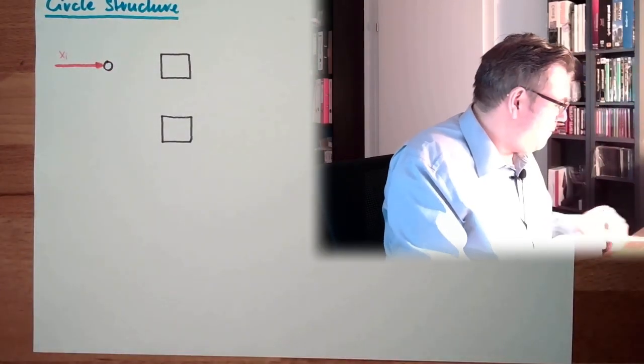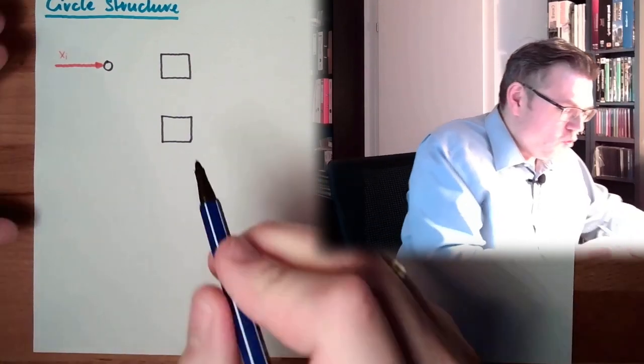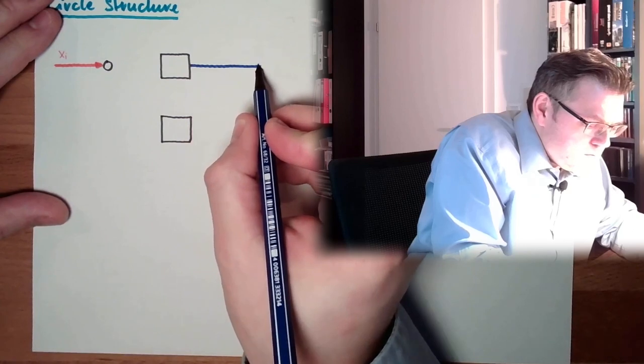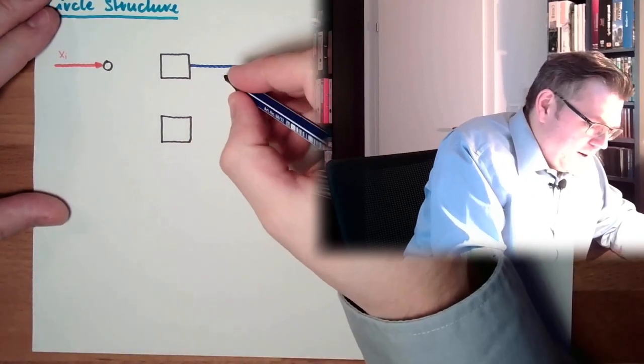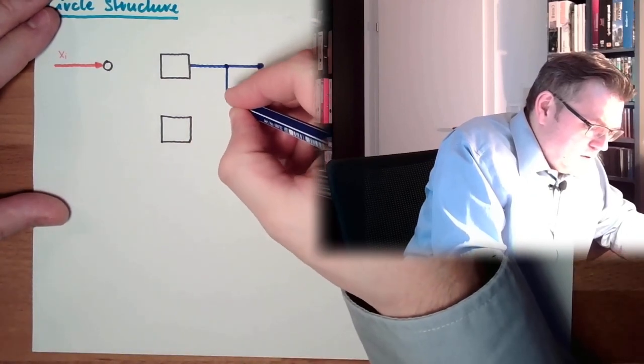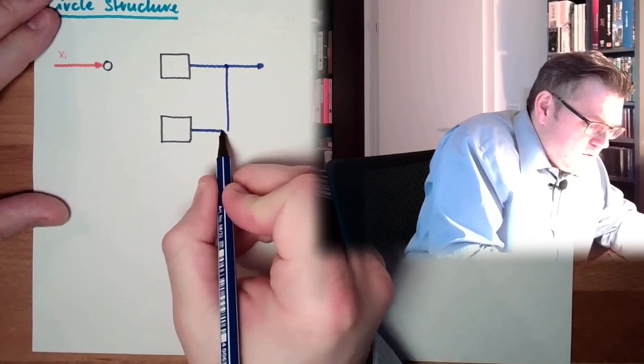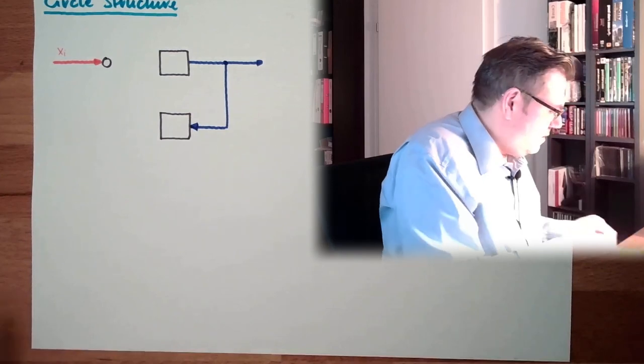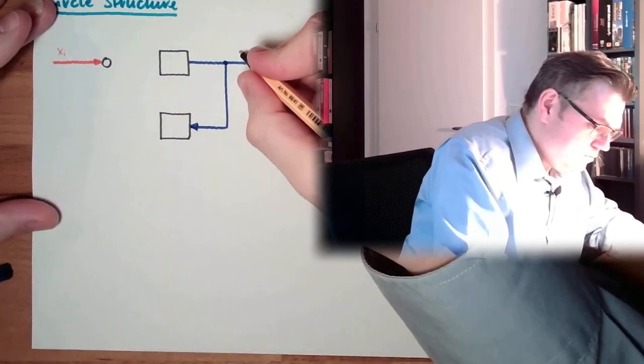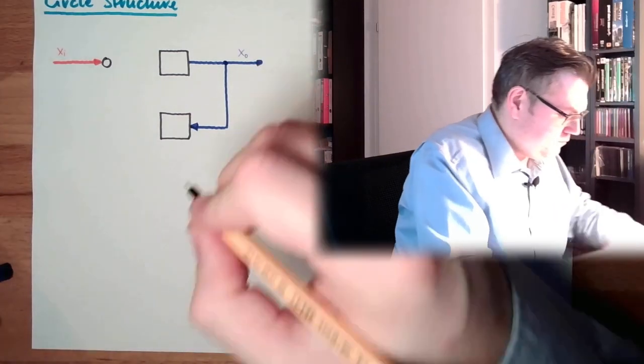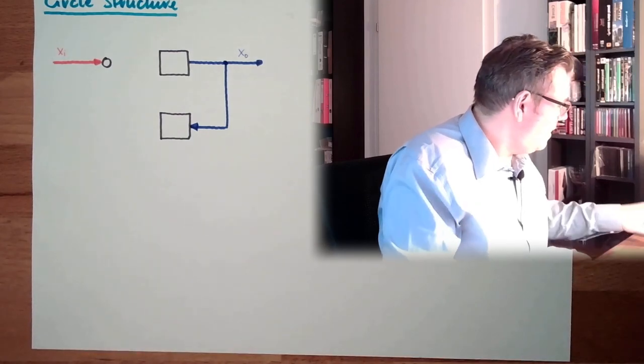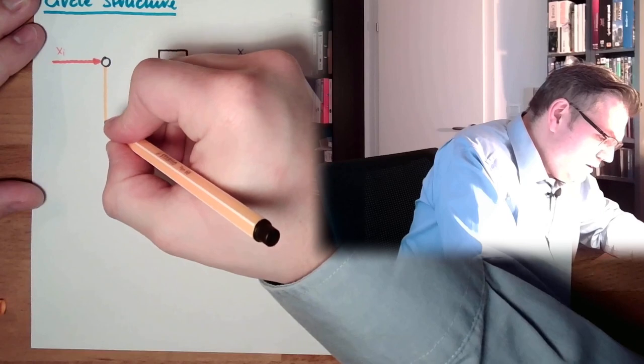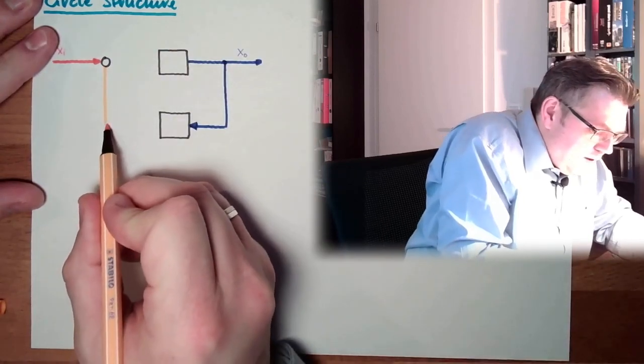And back there we have XO. But XO is not only put out, but also fed back. Here we have XO. And this here, this is the feedback loop.